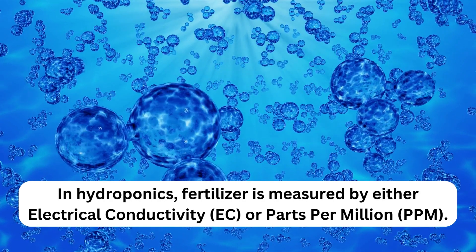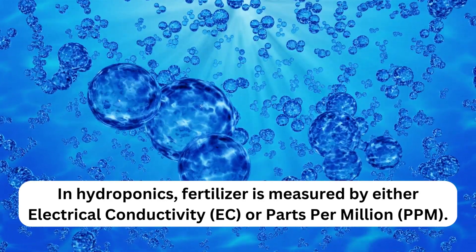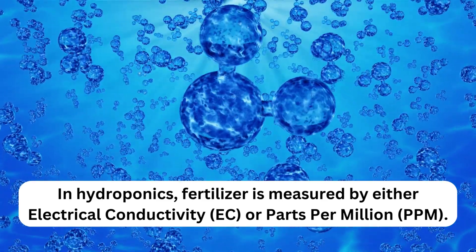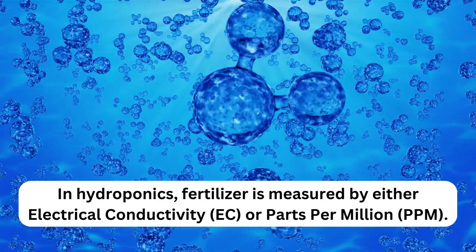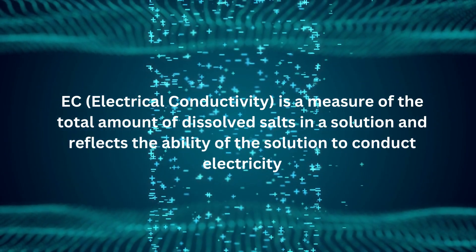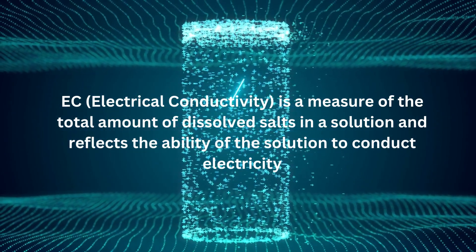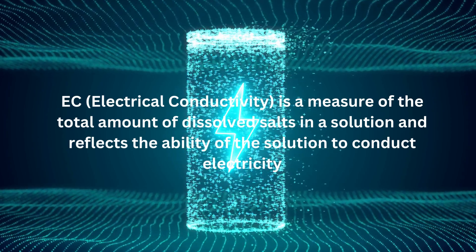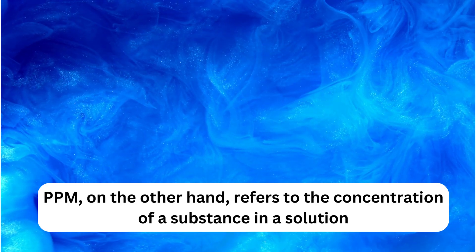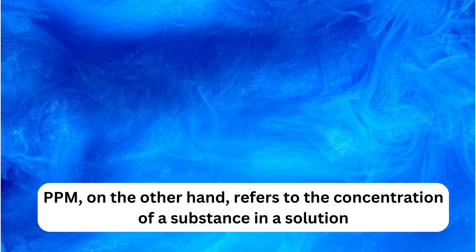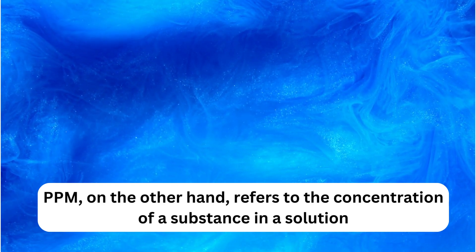How to fertilize in hydroponics: fertilizer is measured by either electrical conductivity, EC, or parts per million, PPM. EC, or electrical conductivity, is a measure of the total amount of dissolved salts in a solution and reflects the ability of the solution to conduct electricity. PPM, on the other hand, refers to the concentration of a substance in a solution.